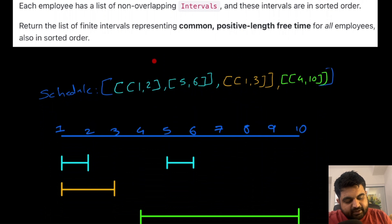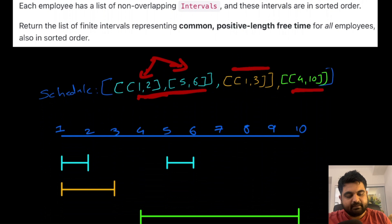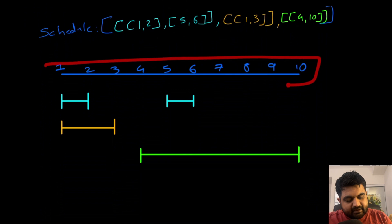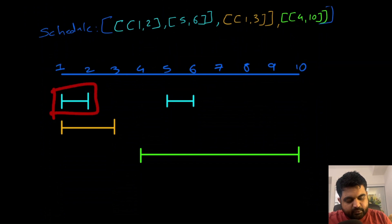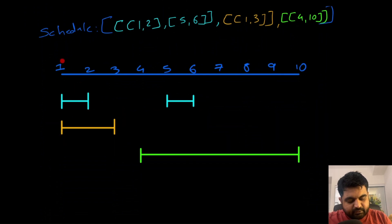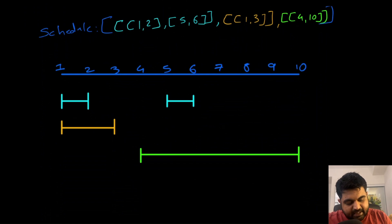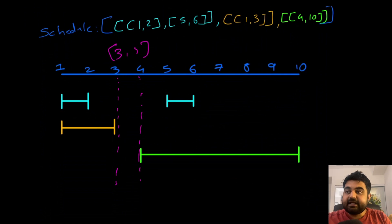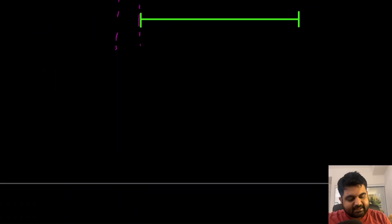In the example, we are given working times for three different employees. Employee 1 works from 1 to 2 and then from 5 to 6. Employee 2 only works from 1 to 3. Employee 3 has their own schedule. If we plot all of these timings on a single linear timeline, we need to find the common free time amongst all employees. We can clearly see that the interval from 3 to 4 is the common free time for all three employees, and that is what we return as the answer.